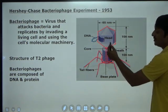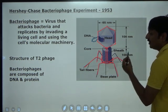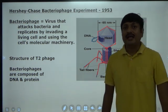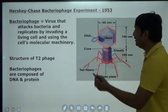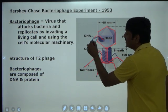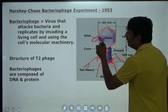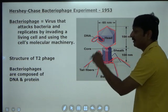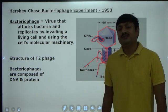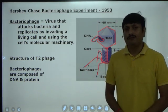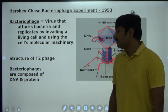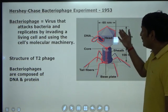These structures — the head, tail, and tail fibers — are made of protein. And inside the head there is presence of DNA. So let us study further details of the Hershey-Chase experiment.